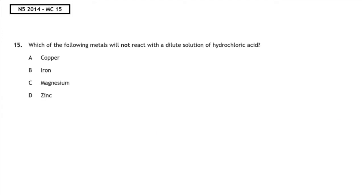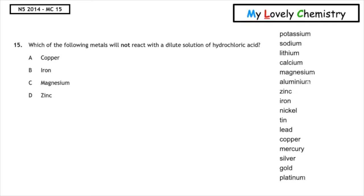This past paper question is from National 5 2014 Multiple Choice 15. Which of the following metals will not react with a dilute solution of hydrochloric acid? Remember the mnemonic: My Lovely Chemistry. Lead and above react with acids. The only metal on the list which is below lead is copper, so the correct answer is multiple choice answer A.